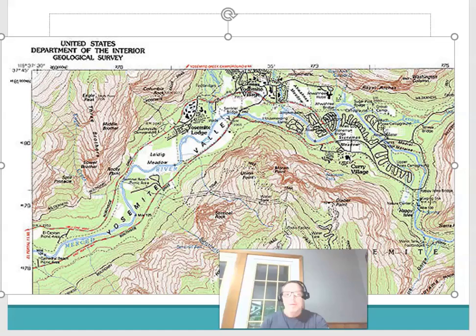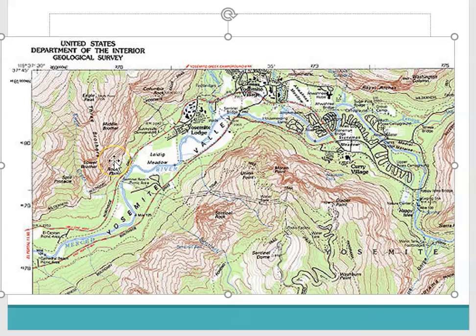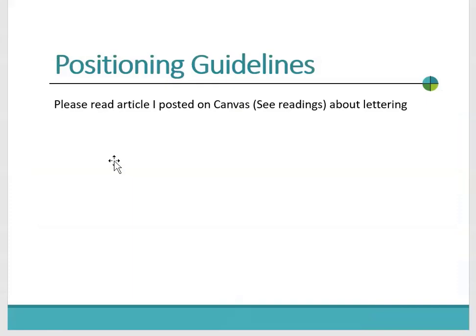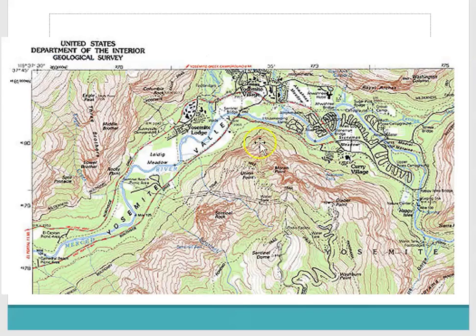Hello. Hope everyone is doing well. So this is going to be my really short version of typography, which is basically map lettering. So this is like the essentials. One of the things that you can do if you're curious about it is actually just stop and think about it — whether you're in your car looking at your GPS device, or you're looking at Google Maps, or when you pick up your next hiking map, or any map that you see — begin to just look at the lettering.